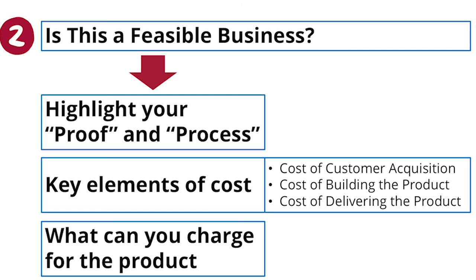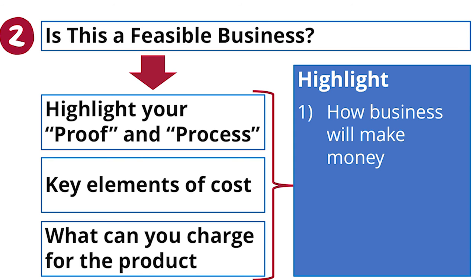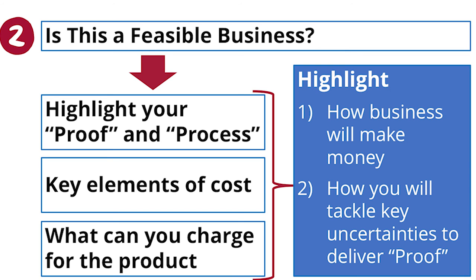Once you have that, put it into something simple and easy to communicate — something where someone would say, 'Yeah, I can see that this business at scale is going to be making money,' and here are the two or three key things that this team has to get over in order to make that real.